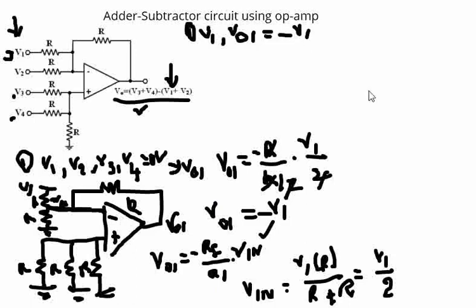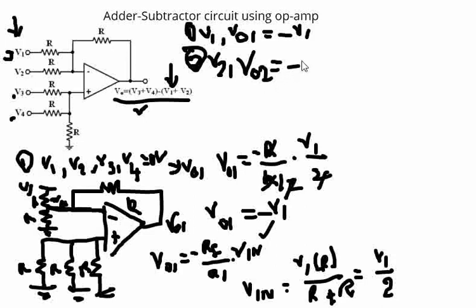In the second case, when V2 is considered, V1, V3, and V4 will be zero. This is almost the same case as before, so the same analysis is applicable. We know that V02 equals minus V2. So we get minus V1 minus V2 at the output when we consider inputs individually at the inverting terminal of this op-amp.